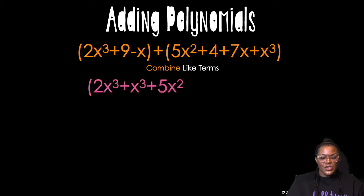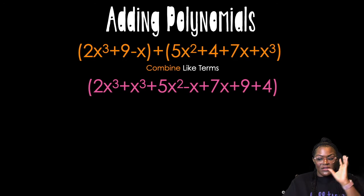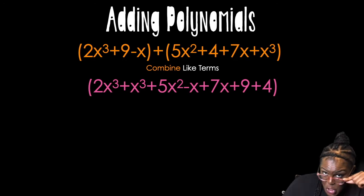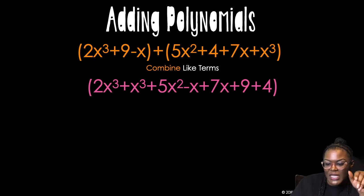I'm going to have 2x cubed and x cubed next to each other. I'm going to have the 5x squared and it doesn't have a matching term, so it's lonely. The negative x and the 7x, the 9 and the 4, right? Cubics together, quadratics together, linears together, constants together. Once I do that, I'm going to combine my like terms.